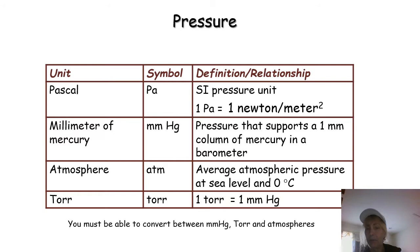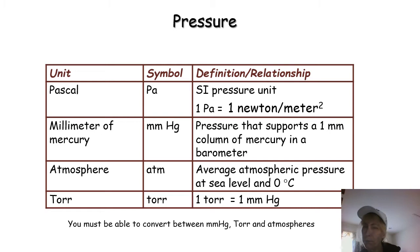In this class you have to be able to do conversion problems that convert between millimeters of mercury, torr, and atmospheres. Those are the requirements of this class. You should be familiar with the SI unit, which is the Pascal and the kilopascal, but the syllabus says to go between millimeters of mercury, torr, and atmospheres. Make sure you do problems — you know how to do these using dimensional analysis.